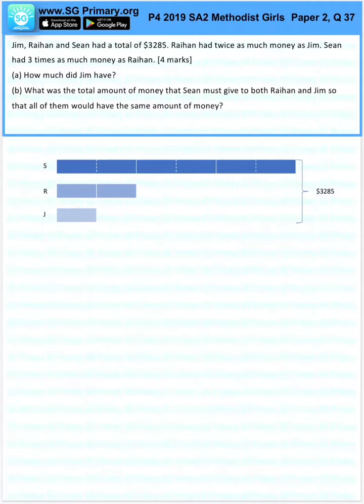What was the total amount of money that Sean must give to both Raihan and Jim so that all of them would have the same amount of money?